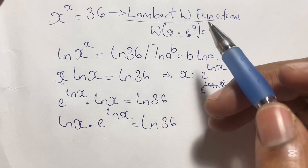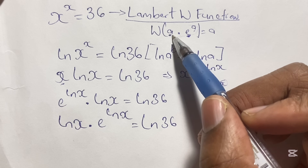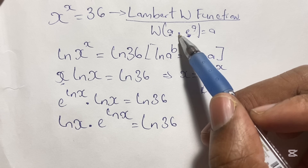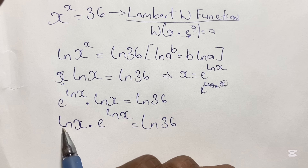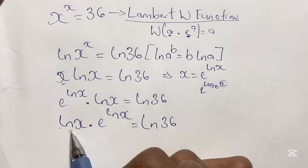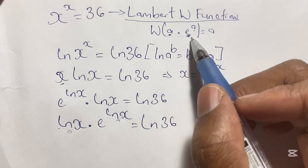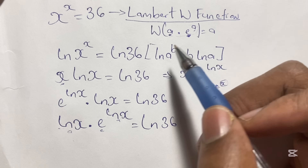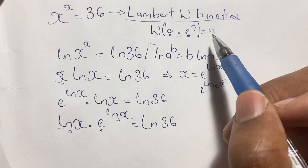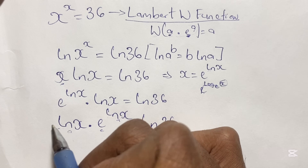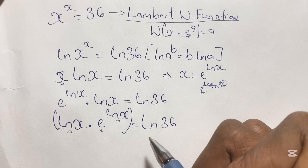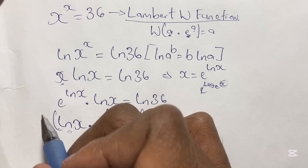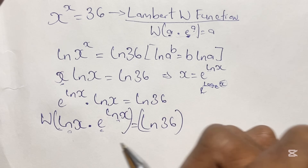As we said before, we need an expression in the form a times e to the power of a. Looking at our expression, ln x is in the base and ln x is also in the power — so a is ln x. We do have that form, so we bracket both sides and apply the W function to these expressions, including the right-hand side W(ln 36).